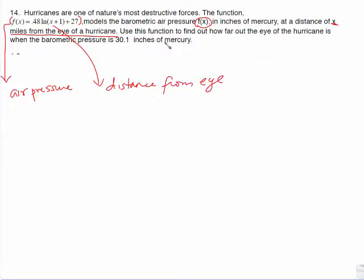So it says, use this function to find out how far out the eye of the hurricane is when the pressure is 30.1. You've been given the pressure. You're asked to find out how far out the eye is.